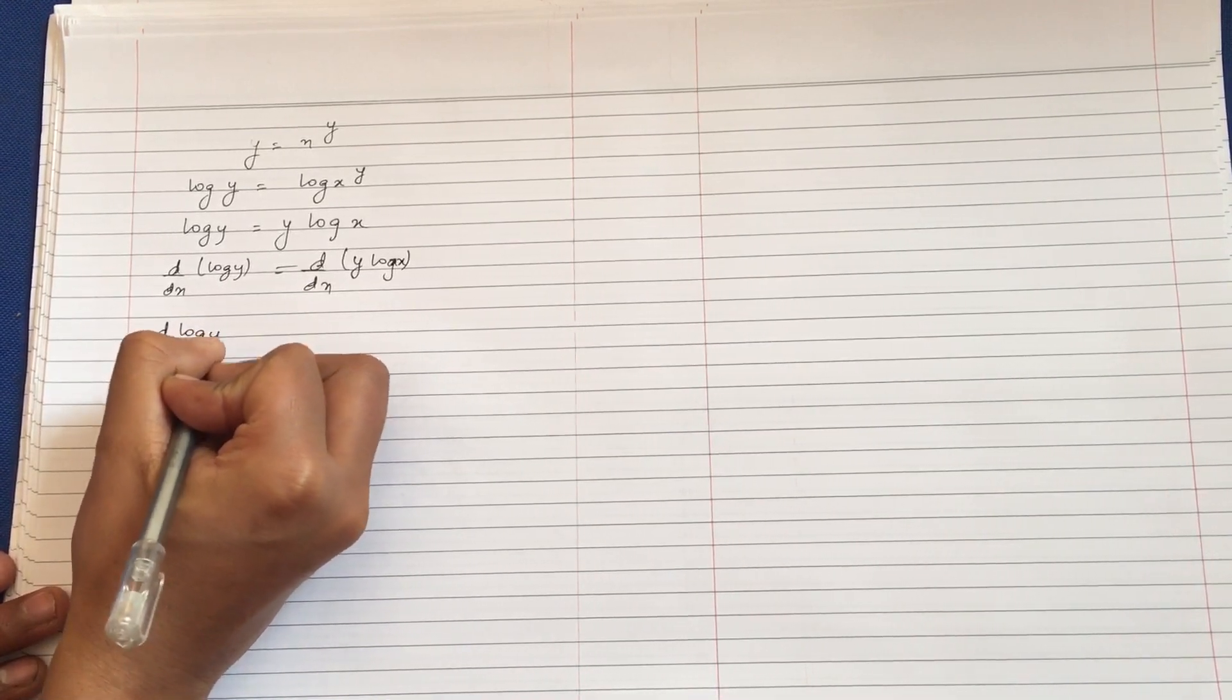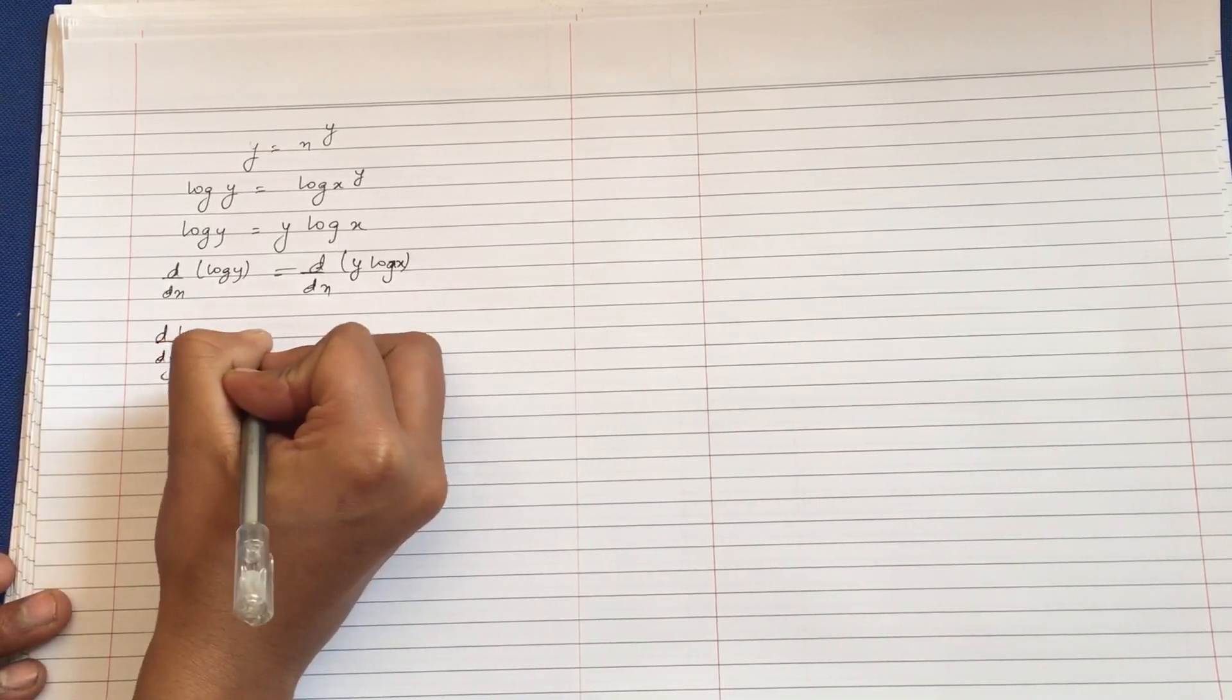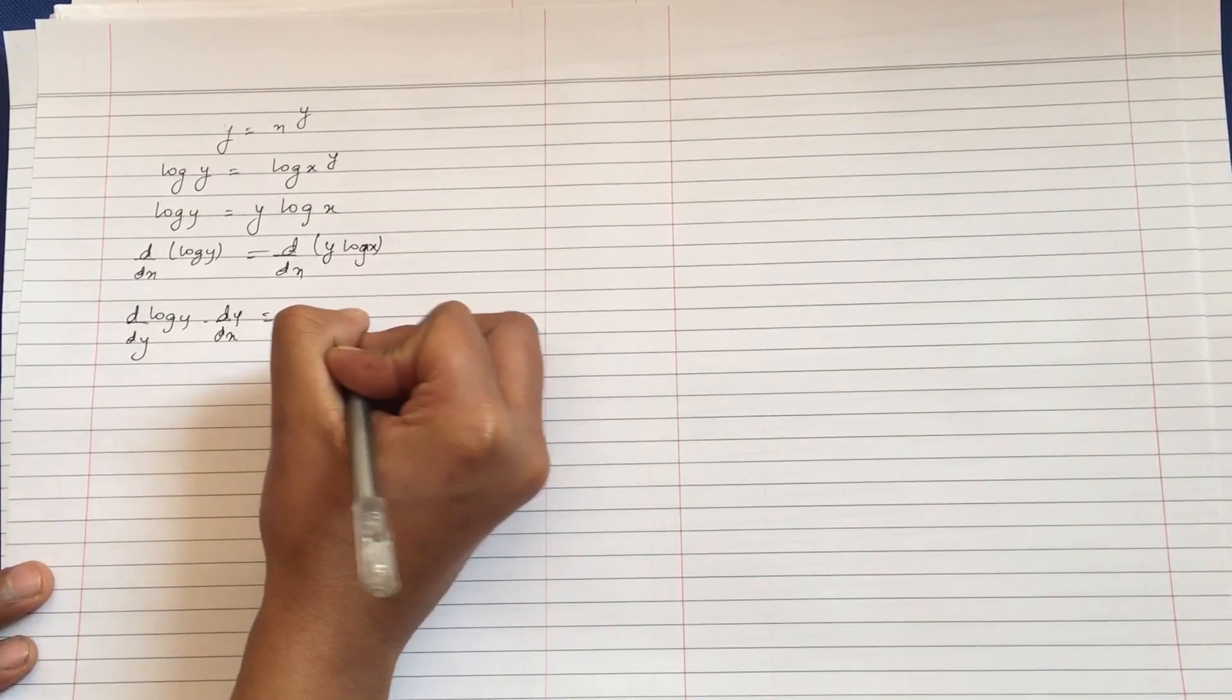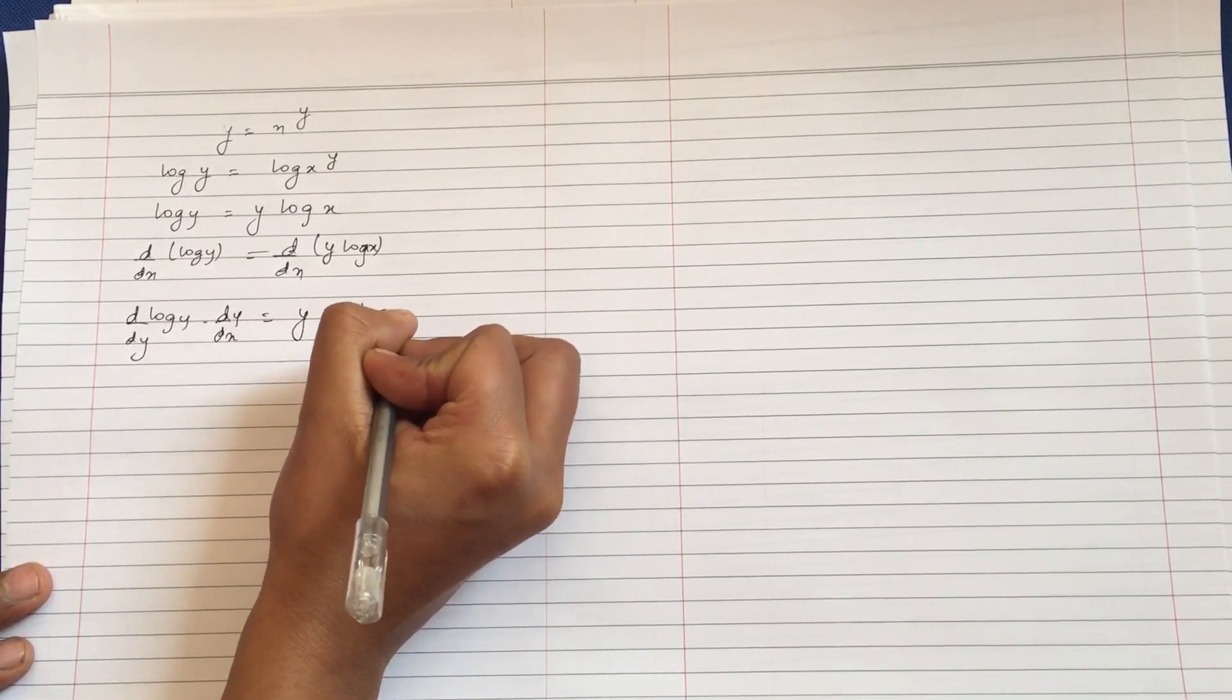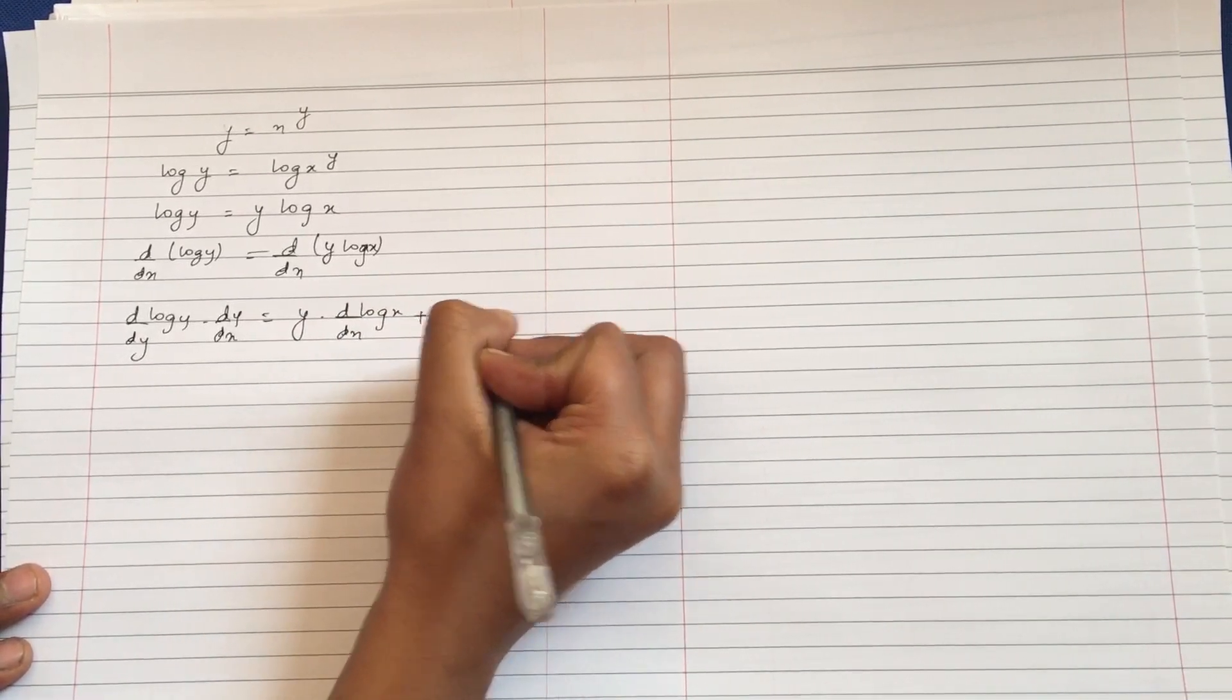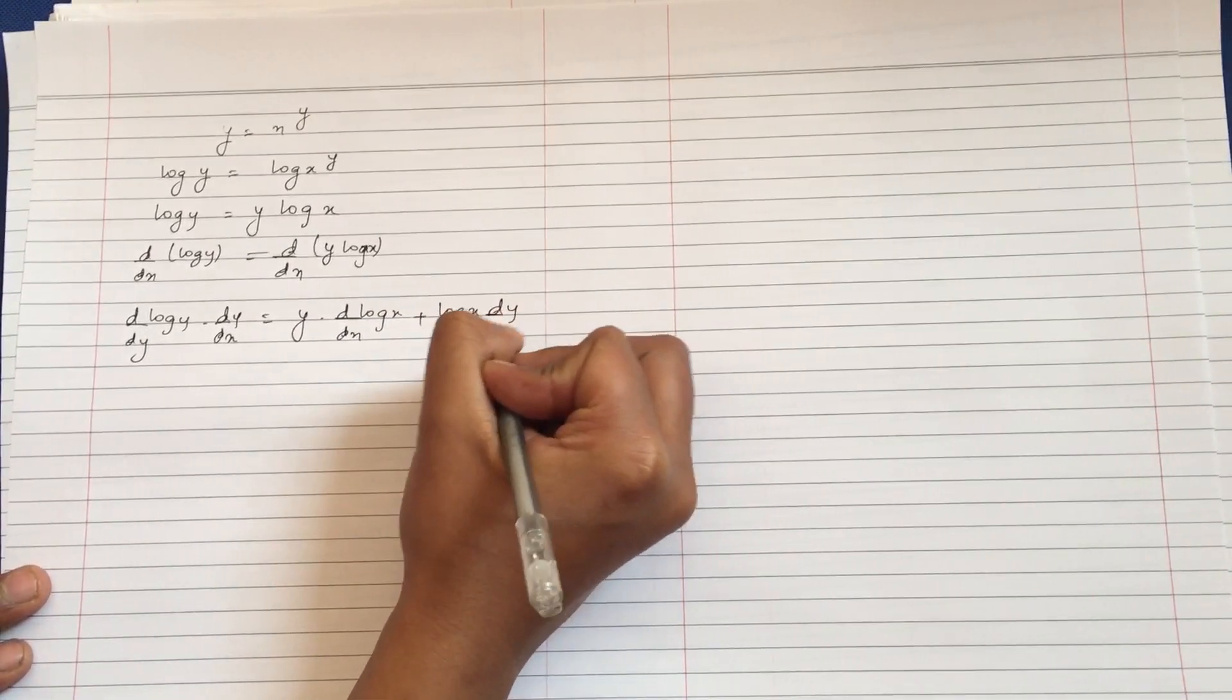First, we have log y. So, dy/dx times log y, plus y times derivative of log x.